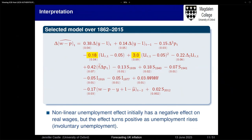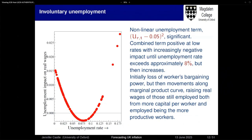The next thing in the model is a non-linear unemployment term. Unemployment is demeaned over this 160-year period at roughly 5%, and a quadratic term comes in as well. Initially, as the unemployment rate rises, the impact on real wages falls — the standard relationship. But once unemployment hits about 8%, the impact on real wages starts to rise again. We first see a loss of workers' bargaining power, then a movement along the marginal product curve which raises real wages of those still employed, both from more capital per worker and from the employed being more productive.